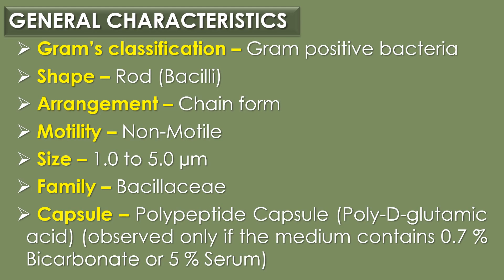First, general characteristics of Bacillus anthracis. Bacillus anthracis is a gram-positive, rod-shaped bacilli arranged in the form of chains and non-motile in nature. The size of Bacillus anthracis ranges from 1 to 5 micrometers and it belongs to the family Bacillaceae.